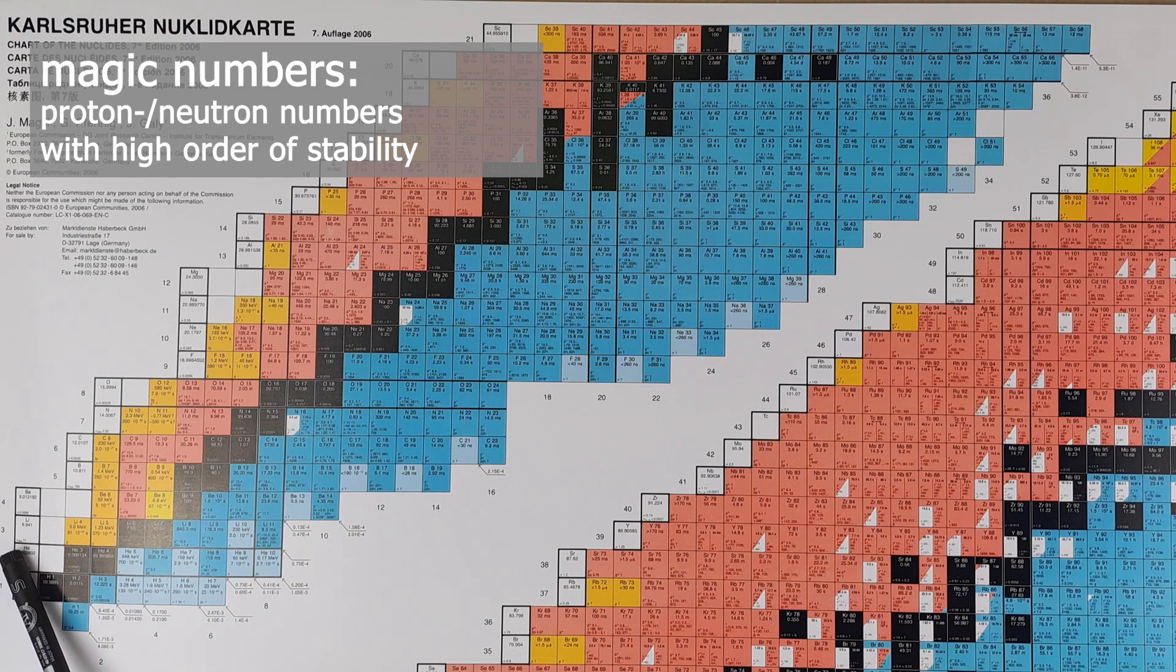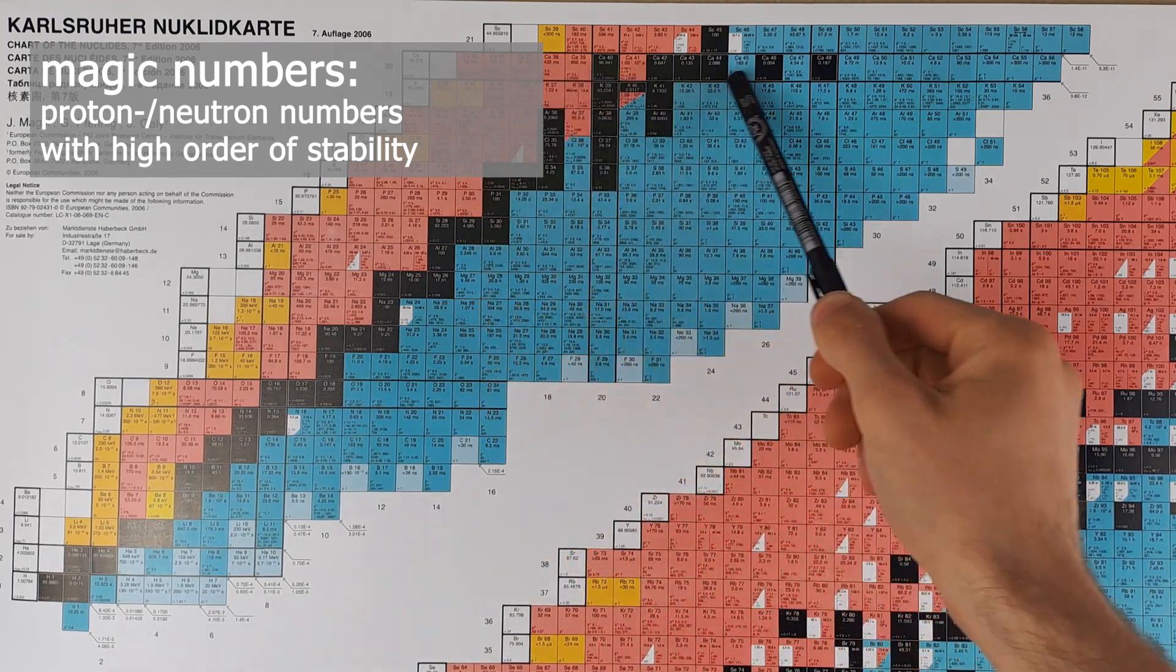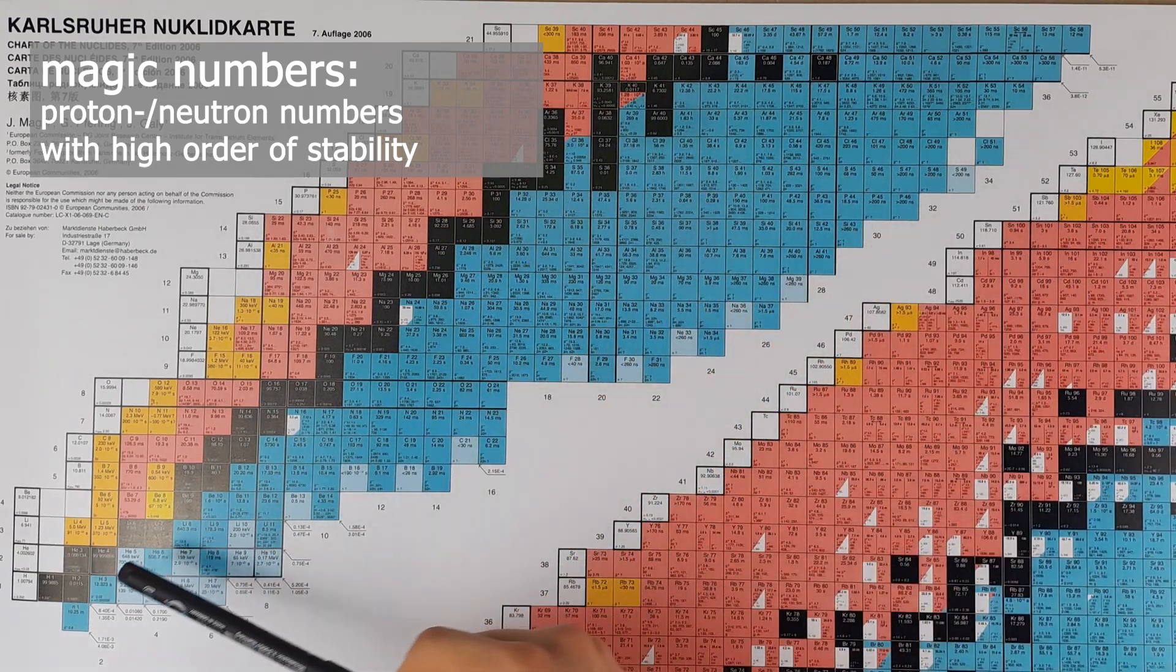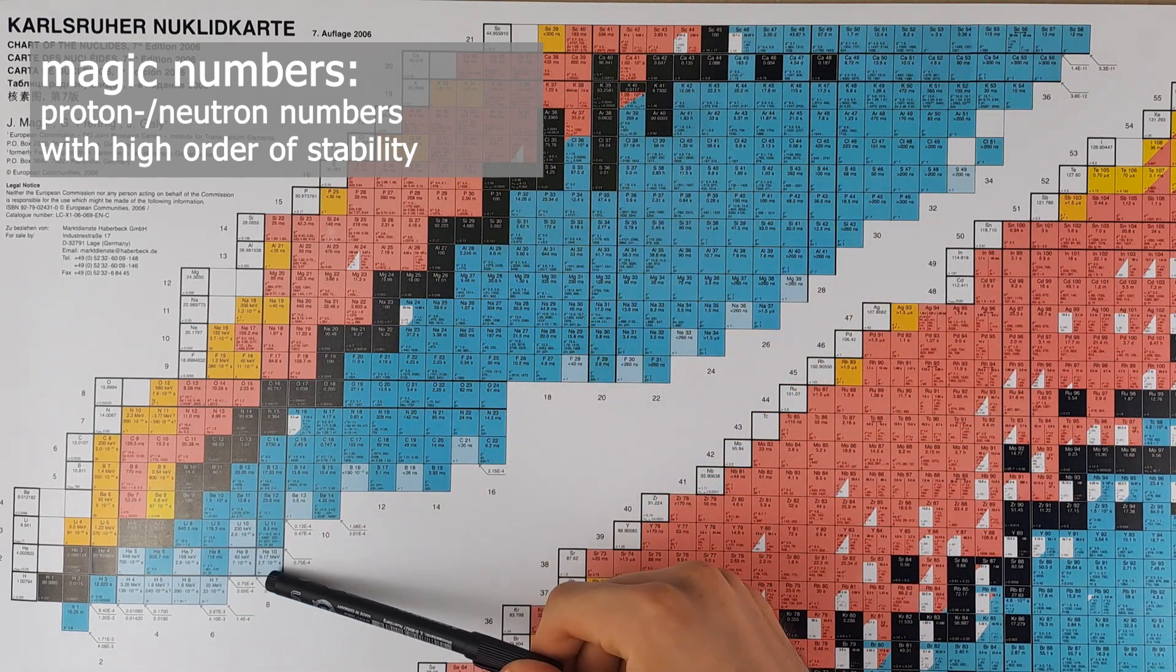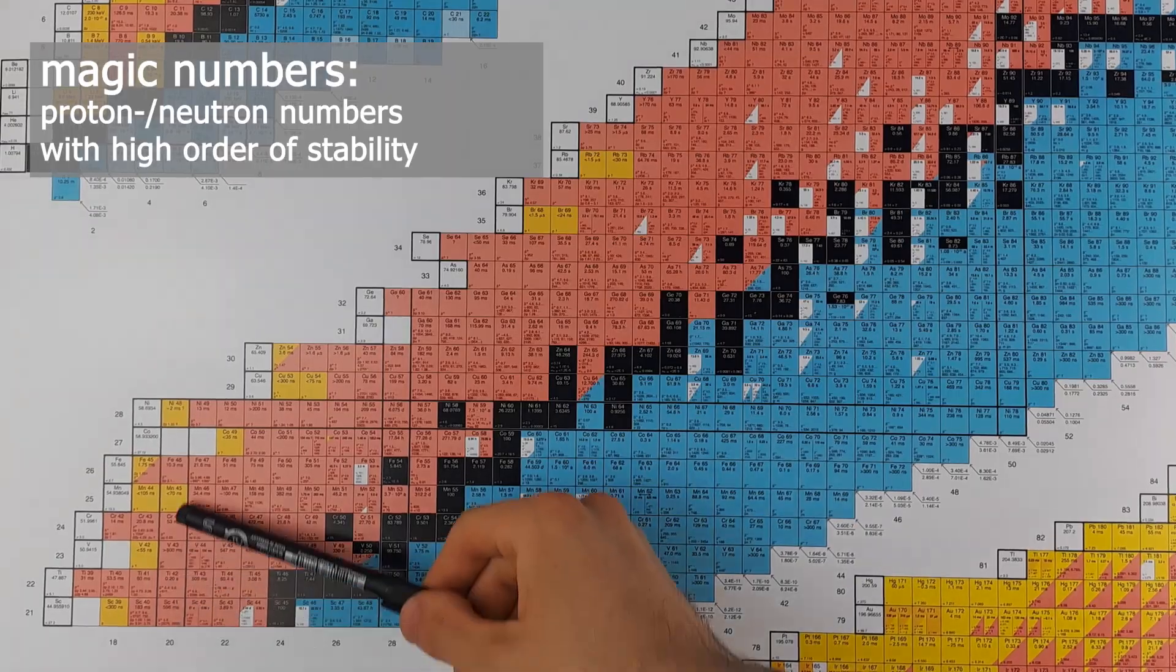These are proton and neutron numbers that ensure particularly stable nuclei. You can compare this with the orbital model that describes electrons quite well. In the electron model it's known that fully filled orbitals such as the d10 configuration are particularly stable.